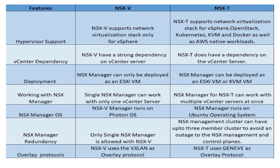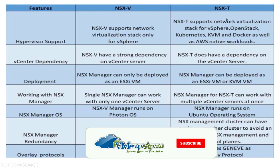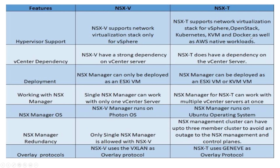When it comes to hypervisor support, NSX-V supports only vSphere and won't support another virtualization platform. NSX-T, however, supports a network virtualization stack for vSphere, OpenStack, Kubernetes, KVM, Docker, and AWS native workloads — a wide variety of hypervisors, operating systems, and virtualization engines.